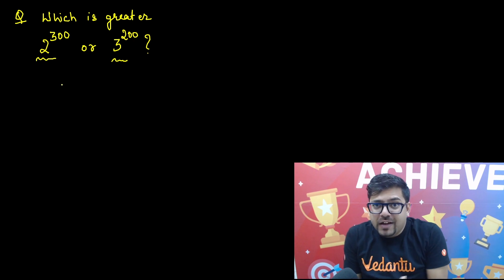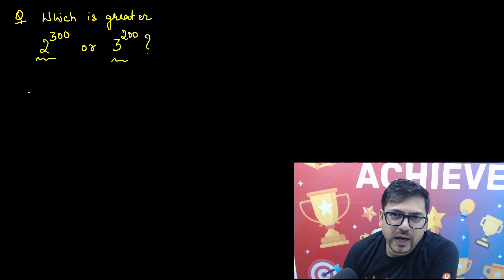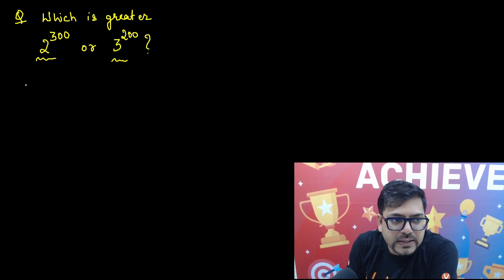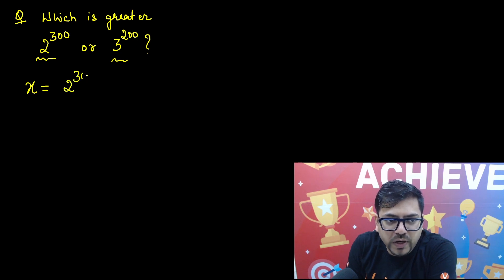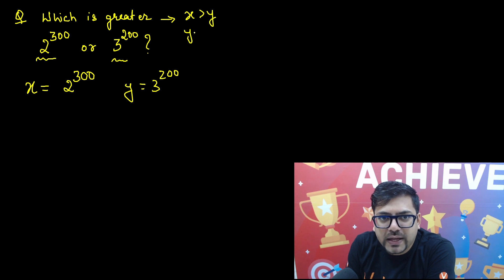We have a very simple base 2 and 3, but the powers are quite massive, quite large. It's not possible to actually calculate the entire value of 2 raised to power 300 or whatever. So what you can do in these cases — let's suppose x equals 2 raised to power 300 and y equals 3 raised to power 200. The question is whether x is greater than y or y is greater than x.